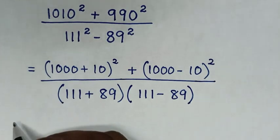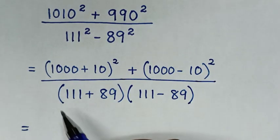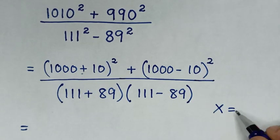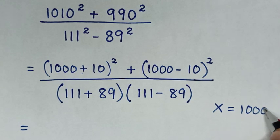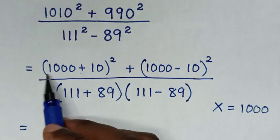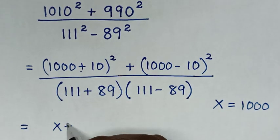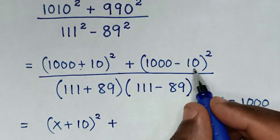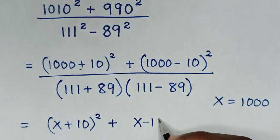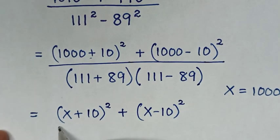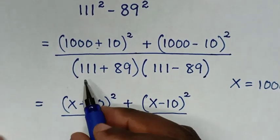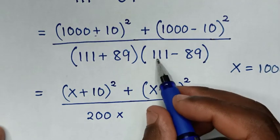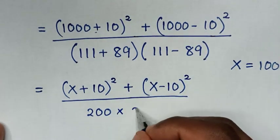Then in the next step, it will be equal to. From here, 1000 we can let as x, so x is equal to 1000. So it will be x plus 10, bracket square, plus x minus 10, bracket square, then over — this plus this is 200, times this minus this is 22.